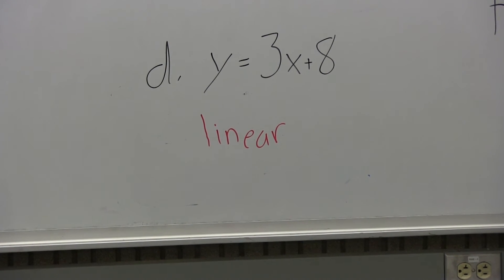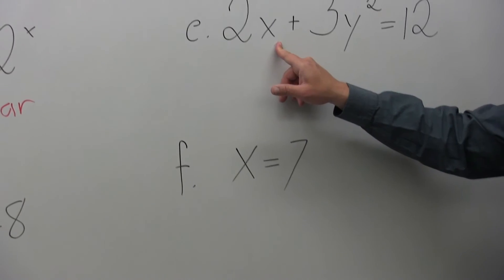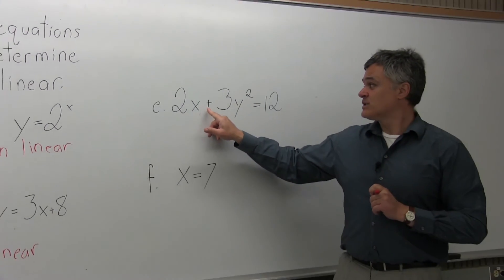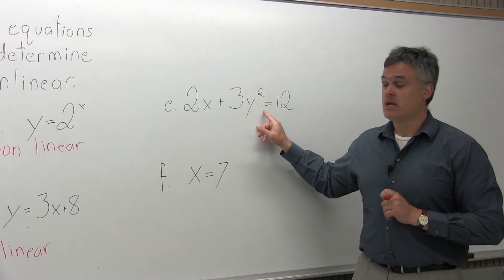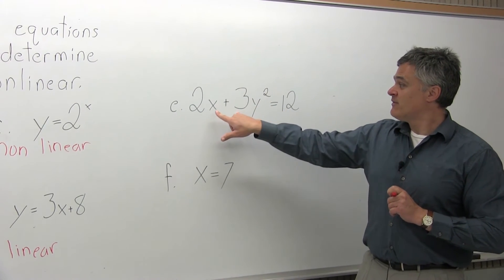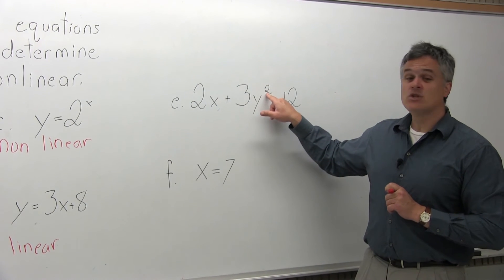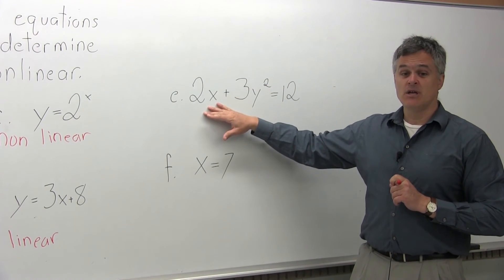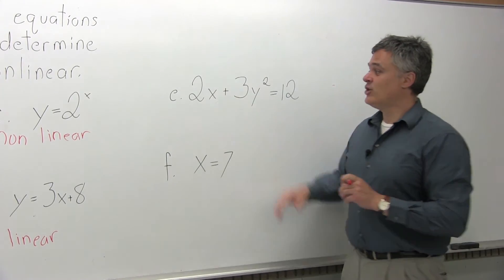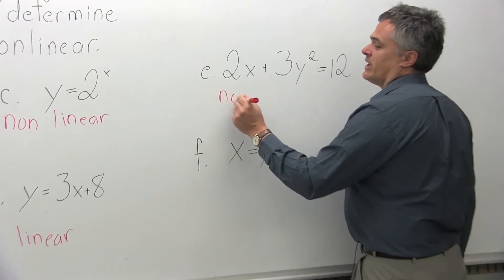Part E, same question. Is this equation linear or non-linear? 2x plus 3y to the second power equals 12. When you examine the variables, the y is not raised to the first power. It's the second power. So the graph of this is a curve. This is a non-linear equation.